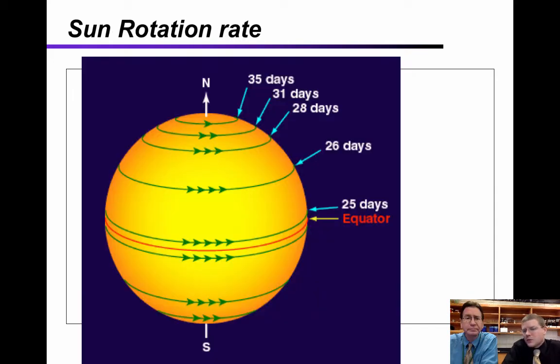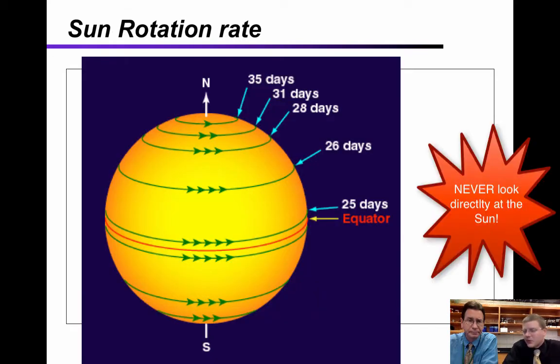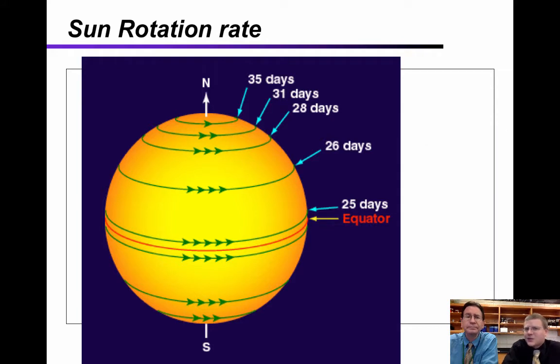And one thing we do notice about the sun when we observe it through special telescopes is that the sun has what we call differential rotation. It doesn't rotate all together. Why would the equator zip around faster than the poles? Well, the fact that it's made out of gases that are superheated make it a plasma, and plasma can move independently. Unlike the solid Earth that all rotates together.